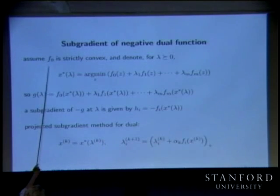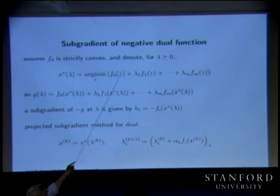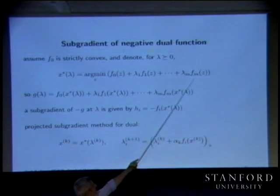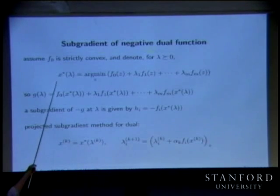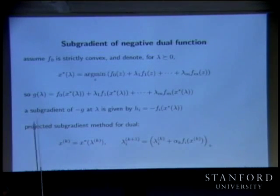F0 is strictly convex means the Lagrangian is strictly convex, and therefore it has a unique minimizer. We're going to call that minimizer x star of lambda — it's a function of lambda.